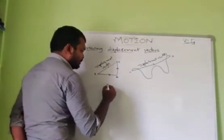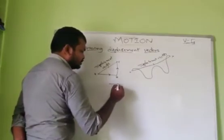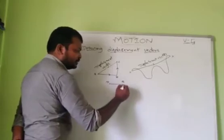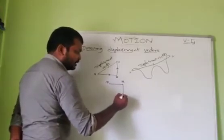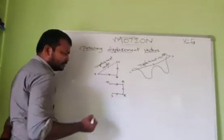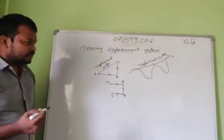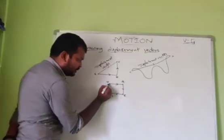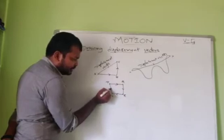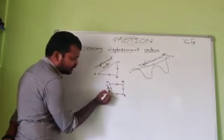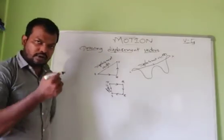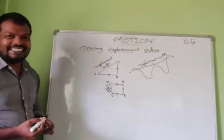Let us see a few more examples. A person started from point E and followed a path to reach point S. They asked you to draw the displacement vector. E is the initial point and S is the final point. If you draw a line combining E and S, that is the displacement vector. You need not follow the actual path — just draw a straight line from initial position to final position.